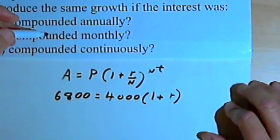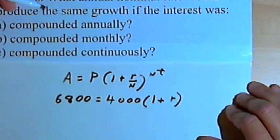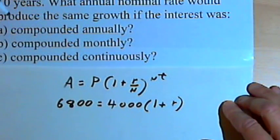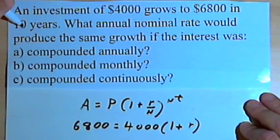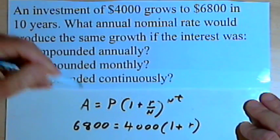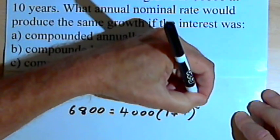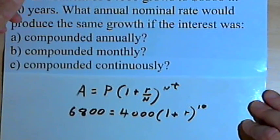And then we're raising that to the nt power. Well, t is time. And we want this to happen over a 10-year period. So n, once again, equals 1, so we'll just raise this to the 10th power.